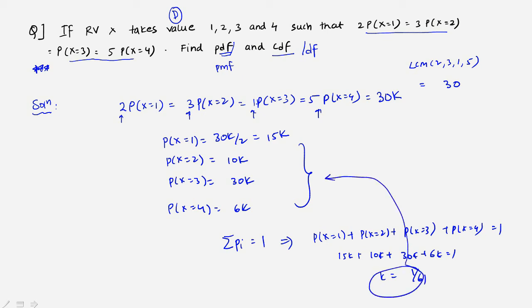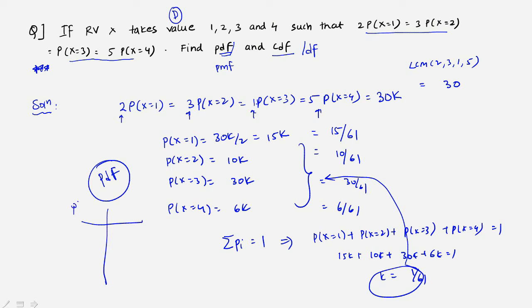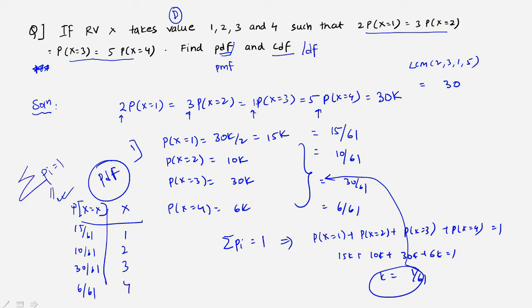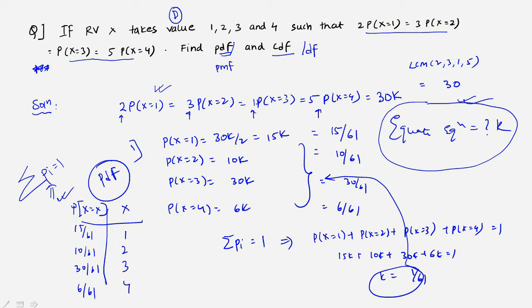Substituting k = 1/61, we get P(X=1) = 15/61, P(X=2) = 10/61, P(X=3) = 30/61, and P(X=4) = 6/61. This is the PDF — a table of x values (1, 2, 3, 4) with their respective probabilities. The key insight is that even without explicit probabilities, we used the fact that all probabilities sum to 1, combined with equating the ratio equation to an LCM multiple of k.